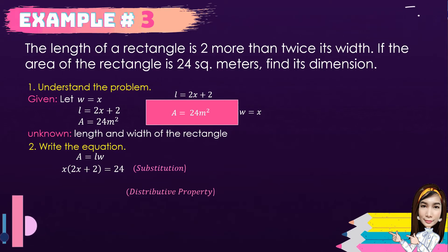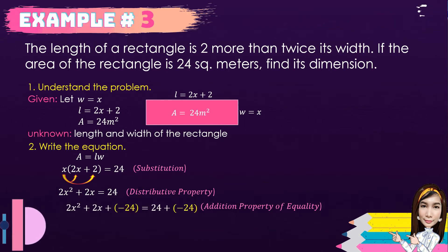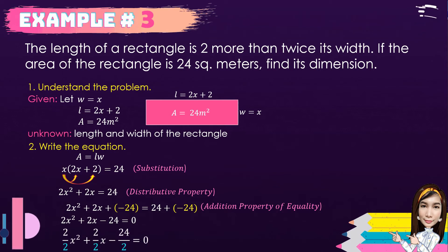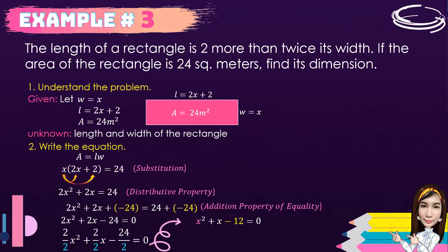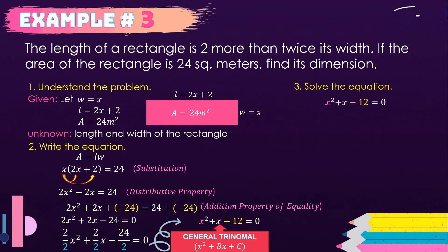Using the distributive property, we distribute x to each term of the binomial, giving us 2x² + 2x = 24. Using the addition property of equality, we add −24 to both sides, giving 2x² + 2x − 24 = 0. We observe the common factor 2, so dividing each term by 2 gives x² + x − 12 = 0. This is a general trinomial where a = 1.